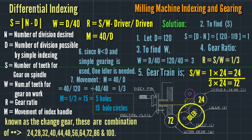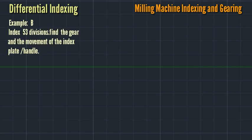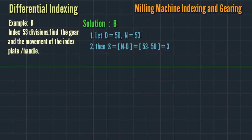Let's proceed to Example B. Index 53 divisions, find the gear and the movement of the index plate handle. Suppose we need 53 divisions. We can use 50, close to 53. Let D equal 50. Then S equals N minus D. N is 53 minus D, 50, so that is 3. W equals D divided by 40, so 50/40. Simplifying: 50 divided by 10 is 5, and 40 divided by 10 is 4, so W equals 5/4.